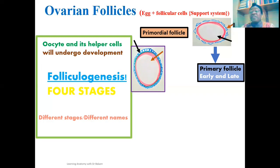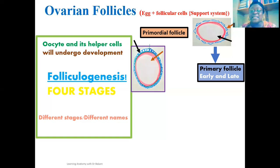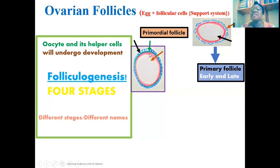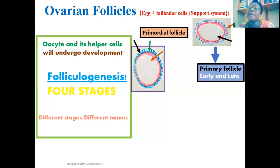Due to continuous proliferation of the granulosa cells — the single layer of cuboidal cells — between the developing primary oocyte and the cuboidal epithelium, a glycoprotein coat is deposited, shown arrowed in green. This glycoprotein is secreted by both the developing primary oocyte and the surrounding granulosa cells and is sandwiched between them. This glycoprotein coat will ultimately be transformed into the eggshell.